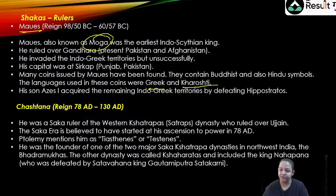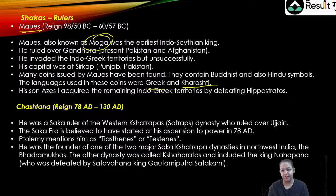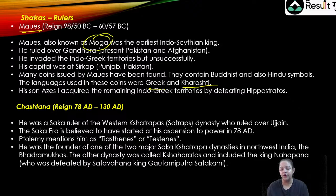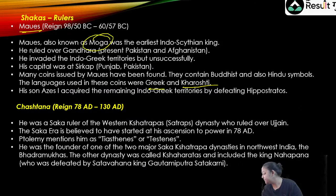Many coins issued by Moise have been found containing both Buddhist and Hindu symbols. The languages used on these coins were Greek and Kharosthi, because that was their native language. His son Azes I acquired the remaining Indo-Greek territories by defeating Hippostratos — the Indo-Greek ruler. The Shakas were very tolerant towards Buddhism and had also accepted Hinduism, as we can see from the symbols on their coins.